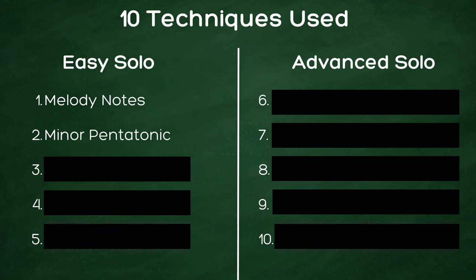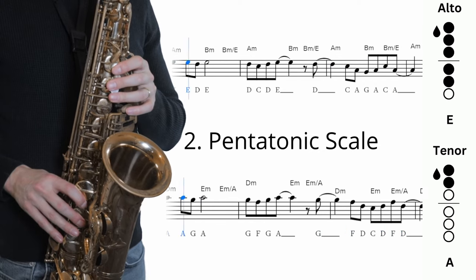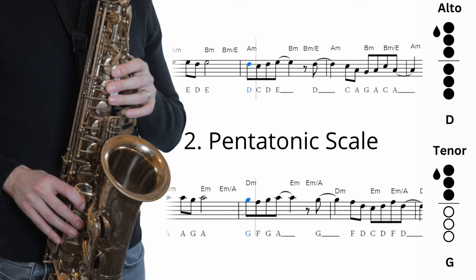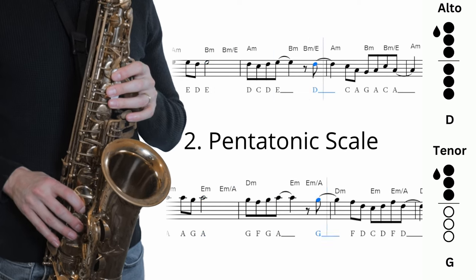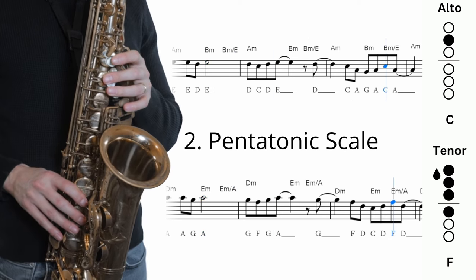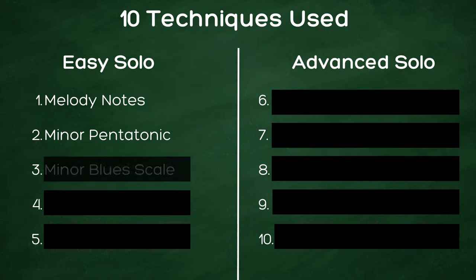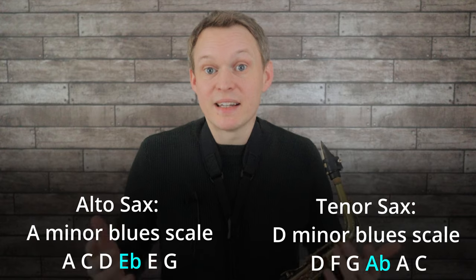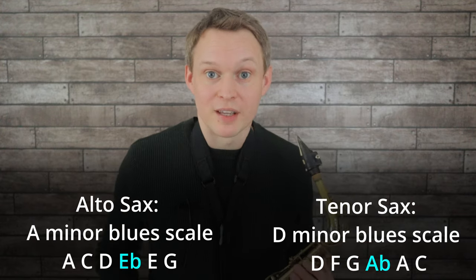So we can take those minor pentatonic scales to improvise with — that's the second technique. The next technique we can use is to expand the minor pentatonic into the blues scale. It's basically the note that lives between the fourth and fifth note of the minor scale, and when you add that in it adds a really bluesy sound.